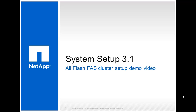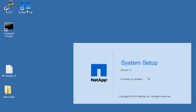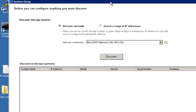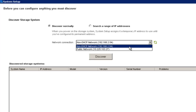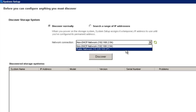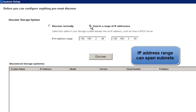In this demonstration, we assume that the user has collected configuration information necessary to complete System Setup for Cluster Data ONTAP. I have downloaded System Setup 3.1 software from the NetApp support site and installed it on a workstation. Double-click on the System Setup shortcut to launch System Setup 3.1. System Setup allows a user to either discover unconfigured NetApp fast platforms on its network or to search for unconfigured nodes over a range of IP addresses.